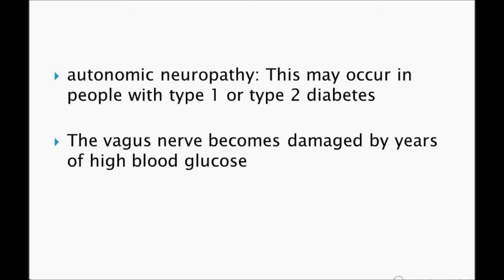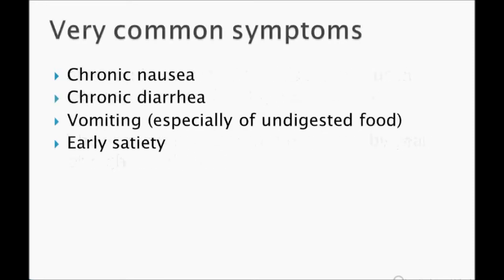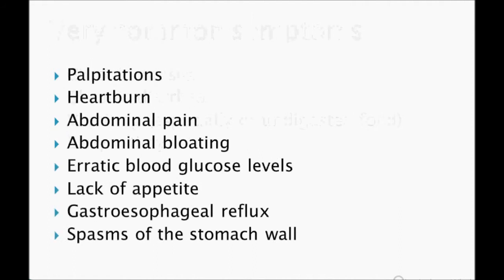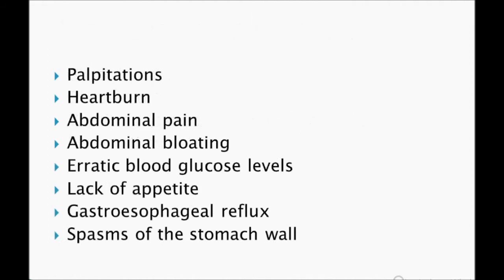Autonomic neuropathy may occur in people with type 1 or type 2 diabetes — the vagus nerve is damaged. Remember, if they ask which nerve is responsible for gastroparesis, the answer is the vagus nerve. Common symptoms include chronic nausea, chronic diarrhea, vomiting, palpitations, heartburn, abdominal pain, bloating, and erratic blood glucose levels.